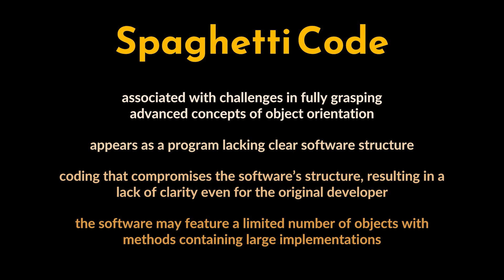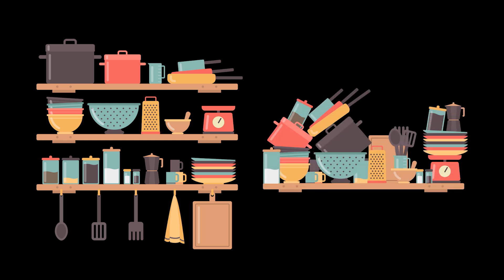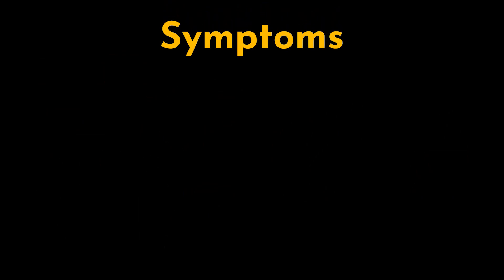As an analogy, imagine a well-organized kitchen where each tool has its designated spot and a specific purpose, and interacts seamlessly with others. In contrast, spaghetti code would resemble a kitchen with utensils haphazardly placed, making it hard to find what we need. This lack of structure makes the system challenging to maintain and extend, limiting opportunities for reusing objects and modules in similar systems.